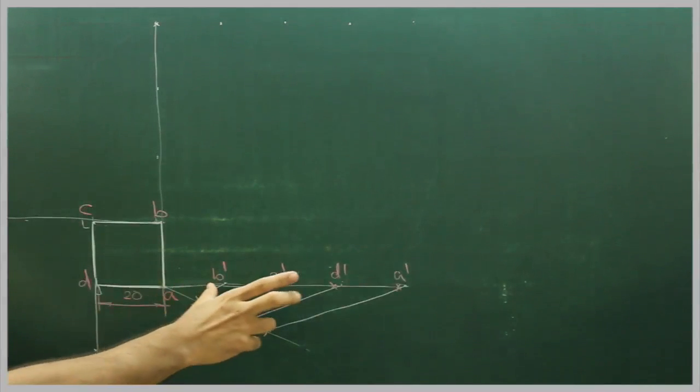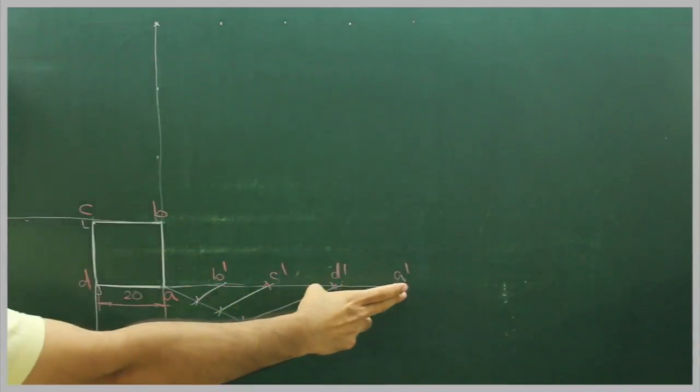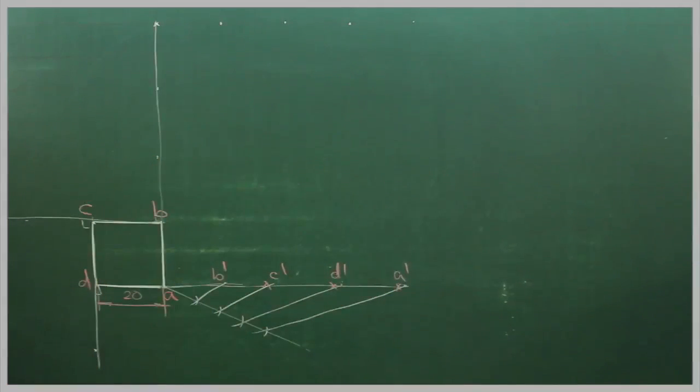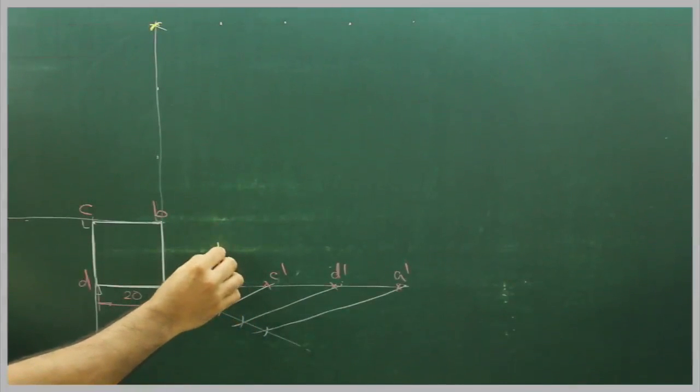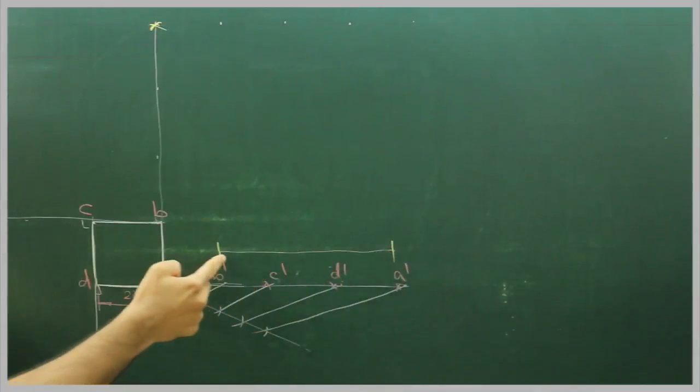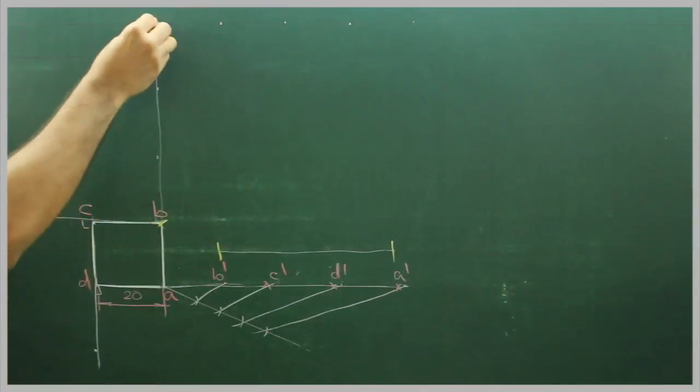You take B dash to A dash and cut from D, C. Take this distance. B dash to A dash and cut from D.